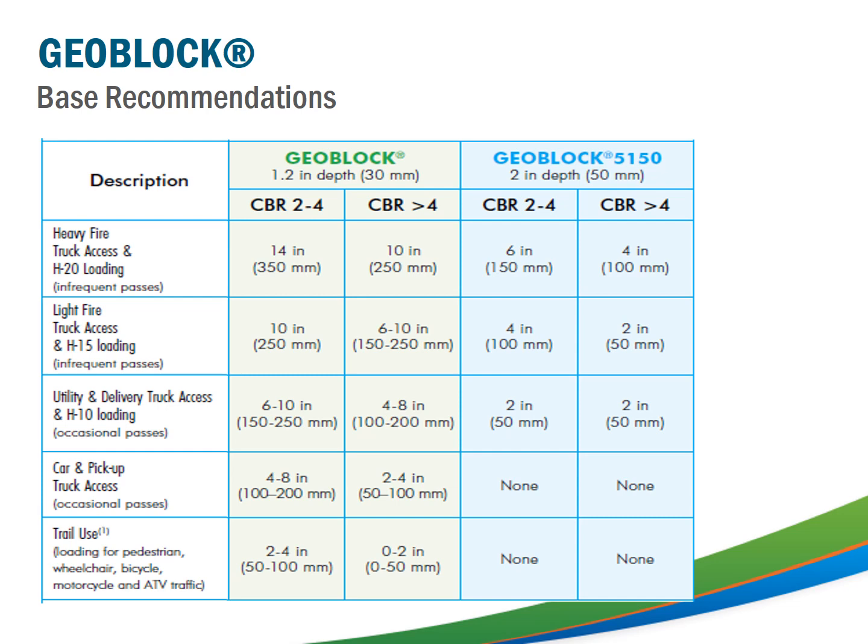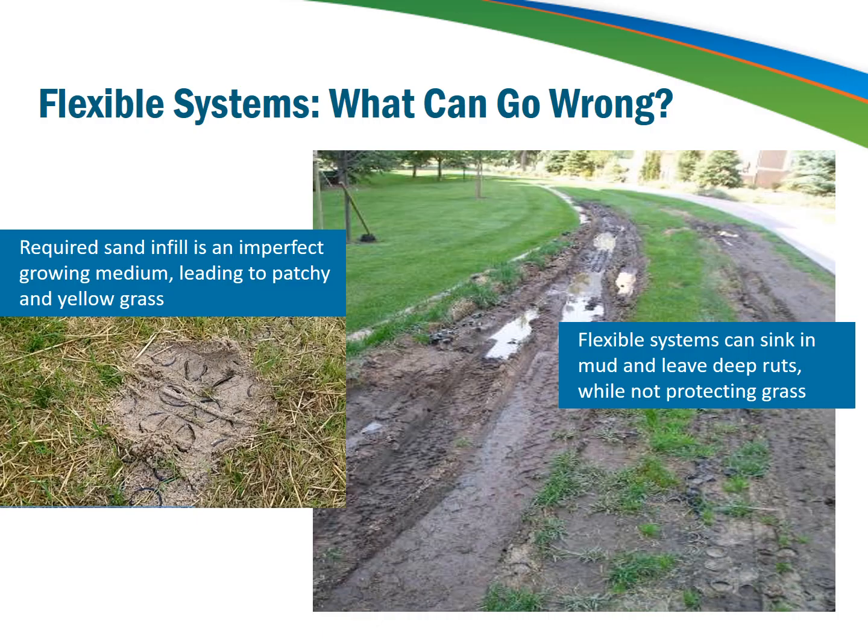There are some flexible systems available for vegetated surfaces that can suffer from problems. Flexible systems tend to rut in areas of soft soil, and because they warp due to vehicle loads, those ruts keep getting deeper over time. These systems also require sand as infill rather than topsoil — and it's not hard to imagine the difference in grass growing in sand versus nutrient-rich topsoil: dead straw-yellow grass versus green healthy soft grass.